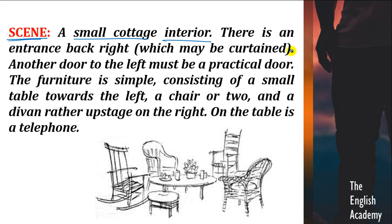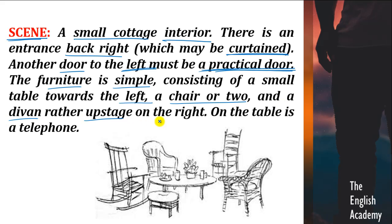Ek chhote se cottage ka andar ka room. There is an entrance back right which may be curtained — ek entrance hai kamre ki right side par piche, uske oopar ek curtain dala hua hai. Another door to the left must be a practical door — woh use ho raha hai, us par curtain nahi dala hua. The furniture is simple, consisting of a small table towards the left, a chair or two, and a divan rather upstage on the right. On the table is a telephone. A divan is a single bed, stored in the living area.